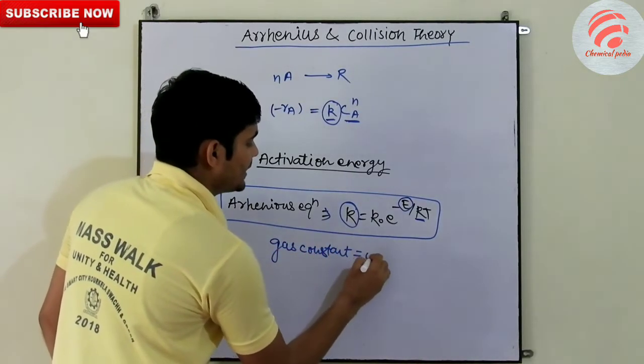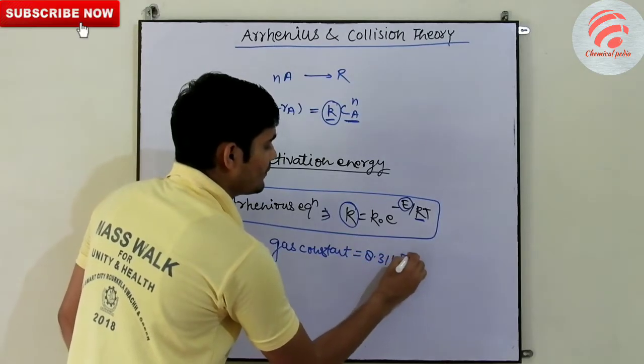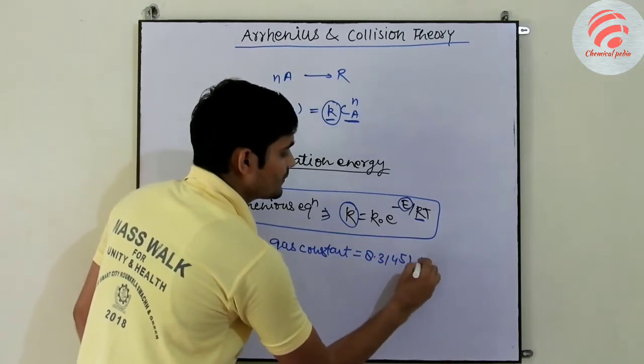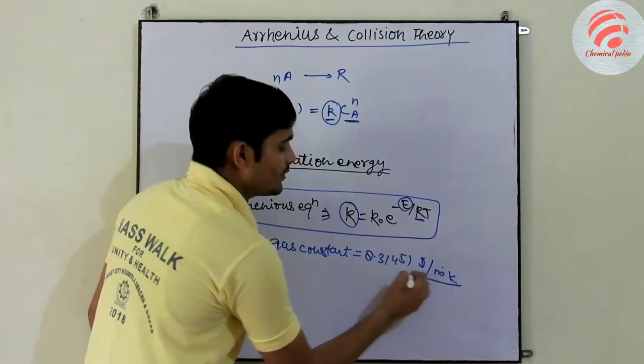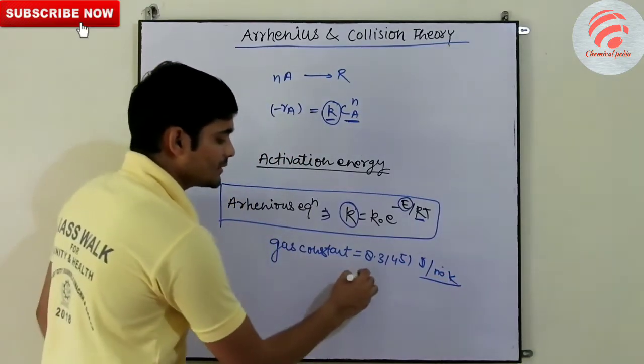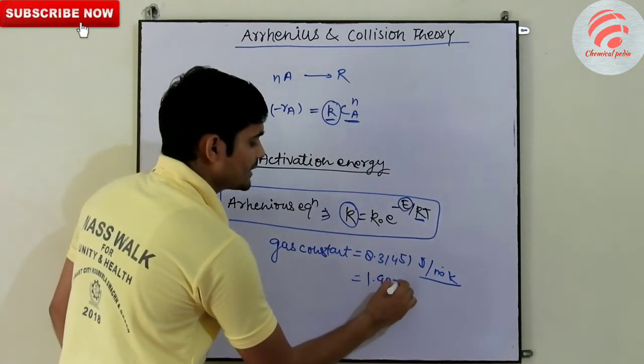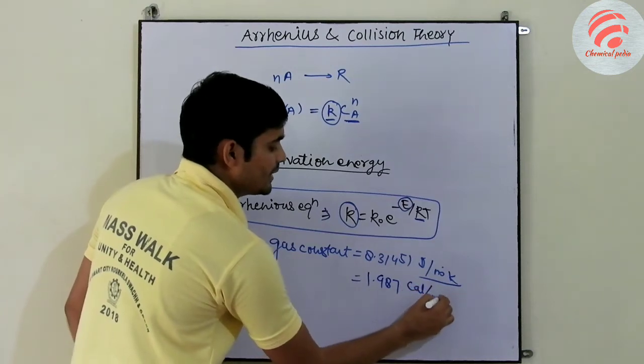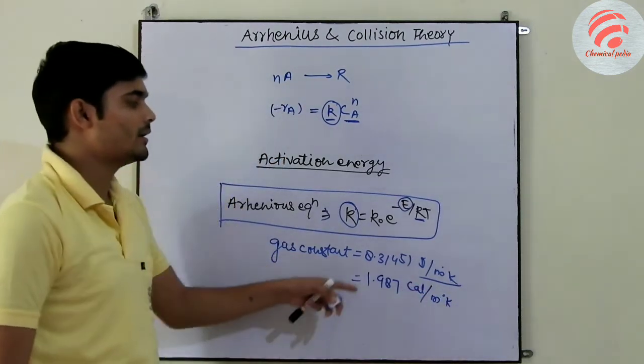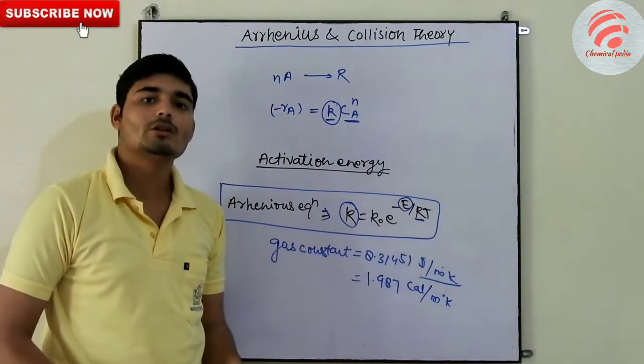Which we know is 8.314 Joule per mole Kelvin, or 1.987 kilocalorie. When we change this value, T is absolute temperature.